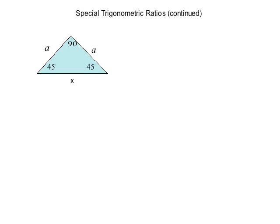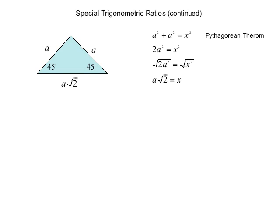Special trigonometric ratios continued. Now we want to find a 45° angle, and we can find this in an isosceles right triangle. An isosceles triangle has two equal sides — in this picture they are a and a — and the two equal angles must add up to 90°, so they'll be 45° and 45°. We have our special triangle: 45-45-90. Using the Pythagorean theorem: a² + a² = x², so 2a² = x², and taking the square root gives x = a√2.